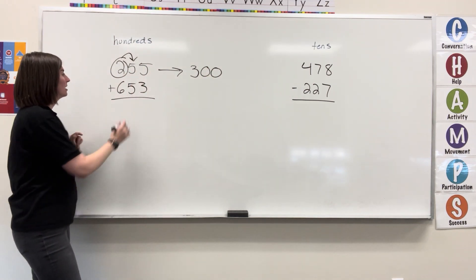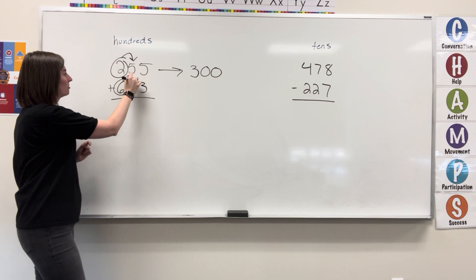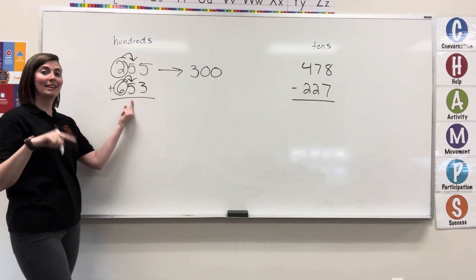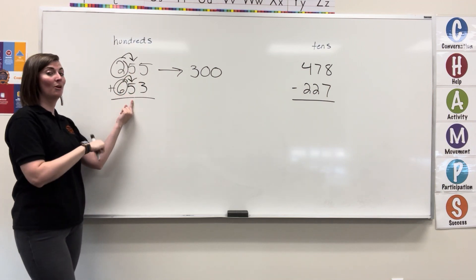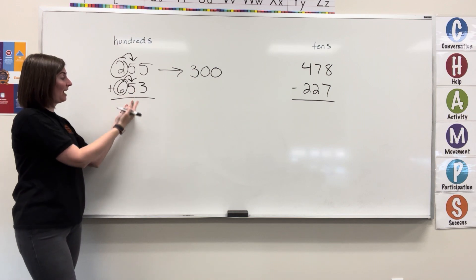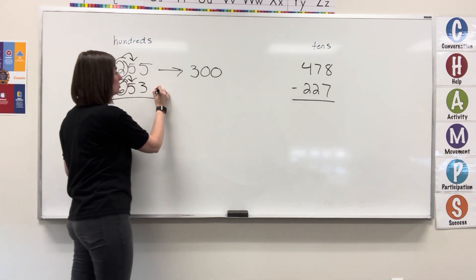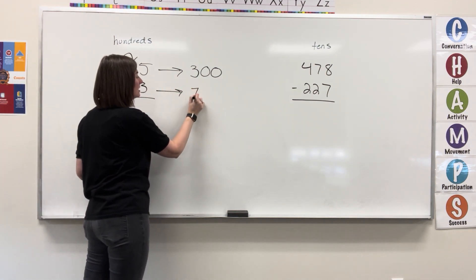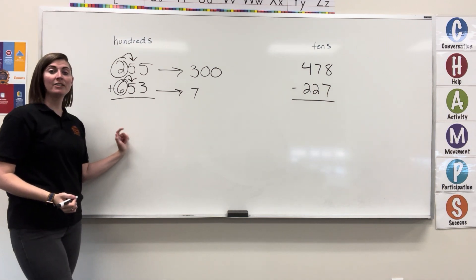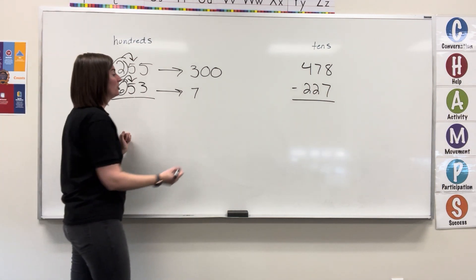Our next number, hundreds place. Look to the right. Four or less, let it rest. Five or more, let it soar. We're at five or more. Six is going to soar. Six becomes a seven. Everything else to the right turns into zeros.